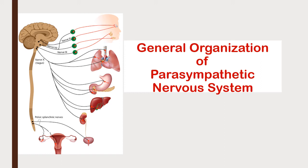In this lecture you will learn about the general organization of the parasympathetic nervous system. In the previous lecture, the general organization of the autonomic nervous system as a whole was discussed, along with the detailed organization of the sympathetic nervous system. After this lecture, you will be clear about the basic anatomical differences between the sympathetic and parasympathetic nervous systems.